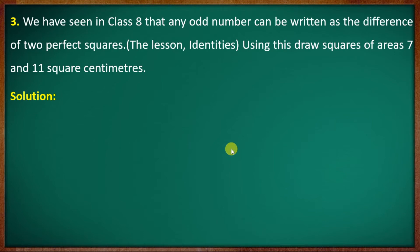We have seen that any odd number can be written as the difference of two perfect squares. This is called the difference of squares identity.